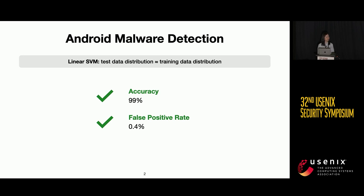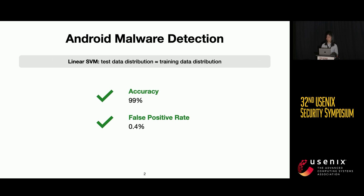Over the past ten years or so, there are a lot of research papers that try to tackle the problem of Android malware detection. And we were wondering, is the problem already solved? If we take an Android malware dataset containing both benign and malicious Android apps, do a random test split, train a linear SVM classifier, the test performance is actually really good.